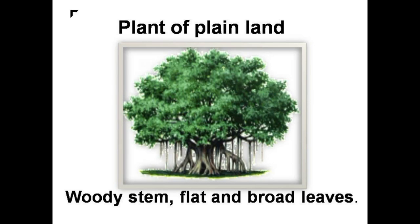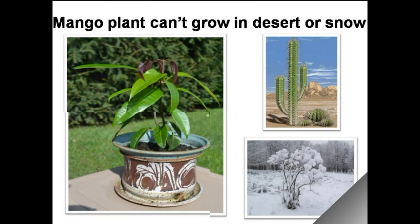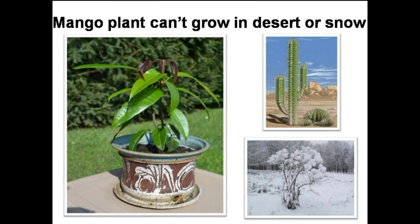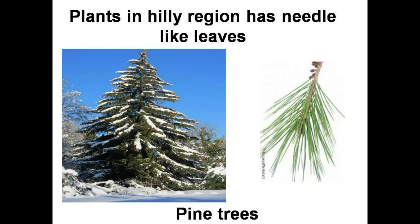Why can't a mango tree grow in a snowy region? Because snow settles down on its leaves and branches and it will die. The pine tree of hilly regions has needle-like leaves, so snow can't settle on them. It has a cone-like shape, so the snow falls off easily.